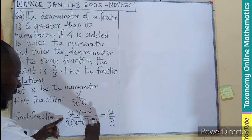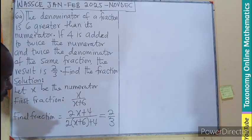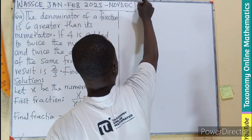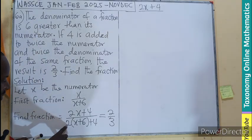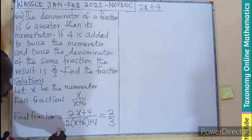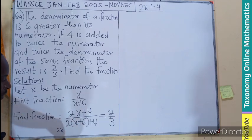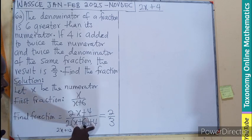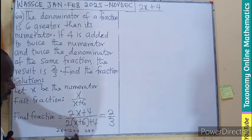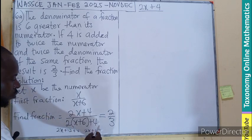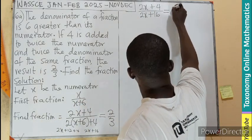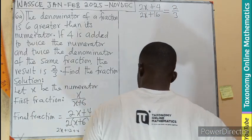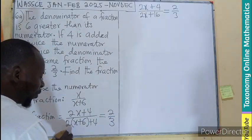So this becomes an equation involving fractions. Let us expand this one since we have a bracket in there. Let's maintain the top, which will still remain 2x plus 4. Then in here, we should be having 2 times x as 2x, then 2 times 6, so plus 12 plus 4. This becomes 2x, 12 plus 4 should be 16. So I should be having 2x plus 16 all equals to 2 on 3.